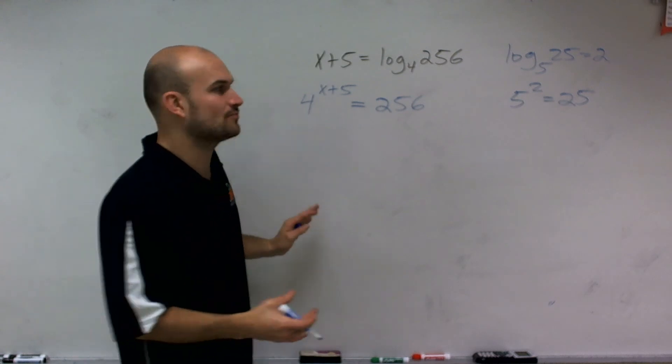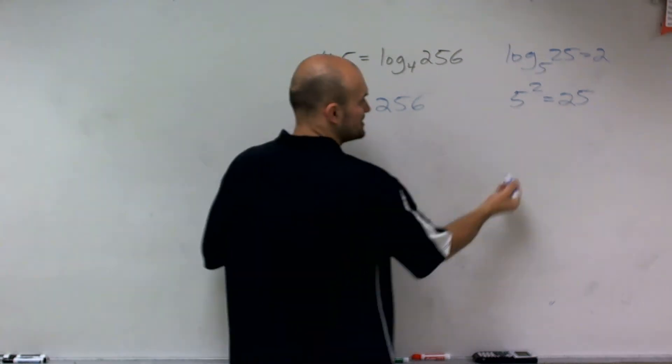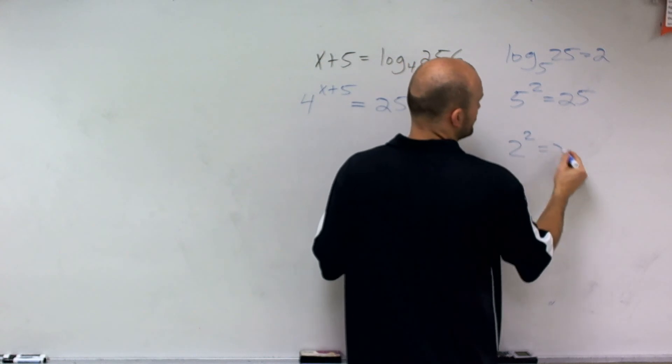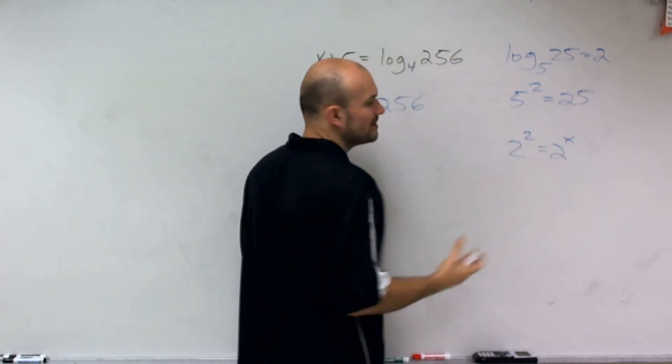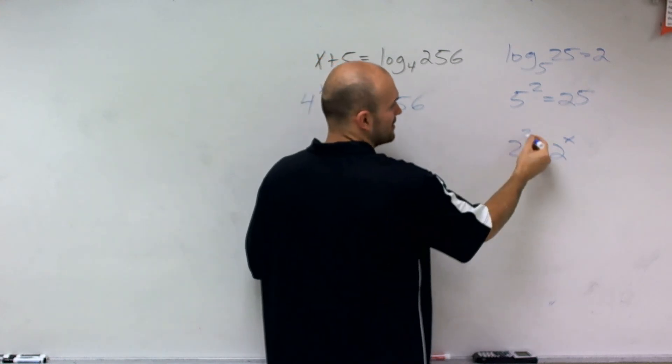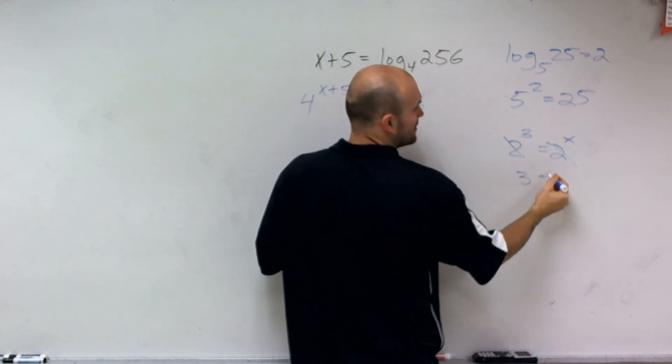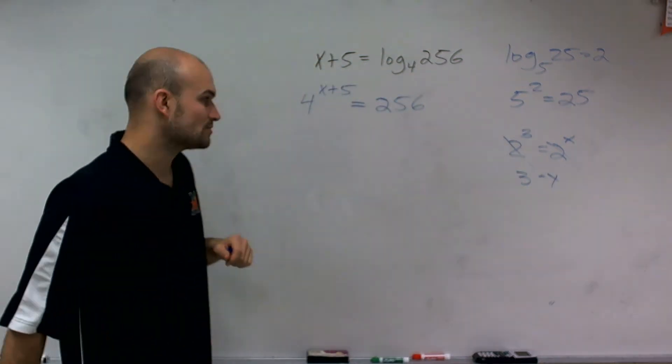And we can only eliminate our bases when we have bases that are exactly equal to each other, which we stated. You know, if I said 2 squared equals 2 to the x, we know we don't need those bases there because we know x has to equal 2. So we don't need these bases here. We can just say our exponents are equal to one another.